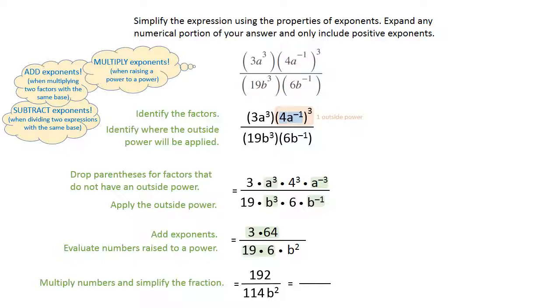Let's simplify this fraction. If you put this in your calculator or play around with it a little bit, you will find that both of those numbers divide by 6, and that gives you a 32 on the top and a 19 on the bottom with the b squared. And that is our final solution in simplest form.